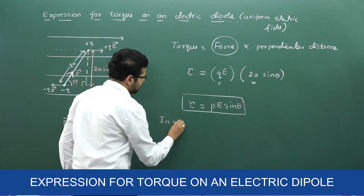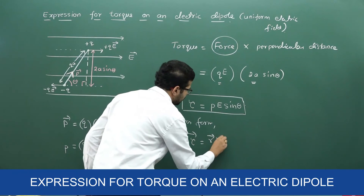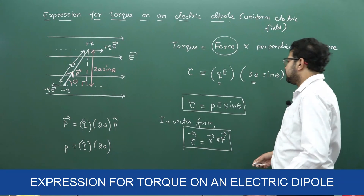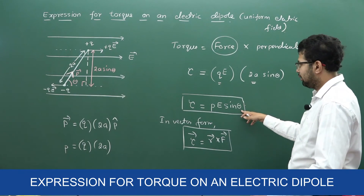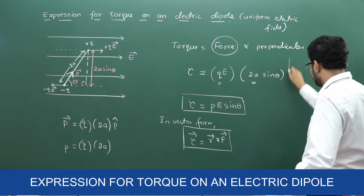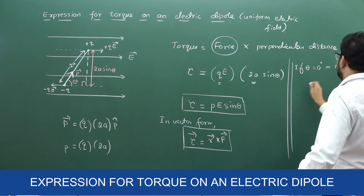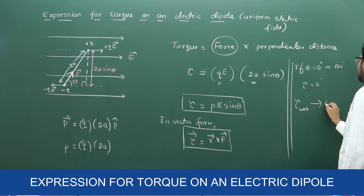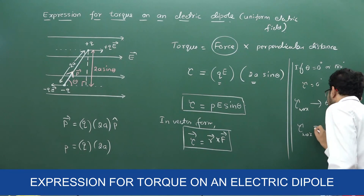In vector form, we can write tau equal to R cross F. From this equation, torque is minimum — torque is zero — if the angle between the dipole moment and the electric field is 0 or 180 degrees. Torque is maximum when theta equals 90 degrees, since sine 90 is 1. Therefore, maximum torque tau-maximum equals PE.